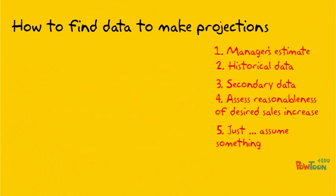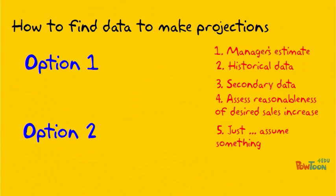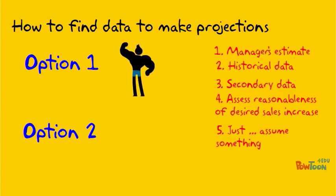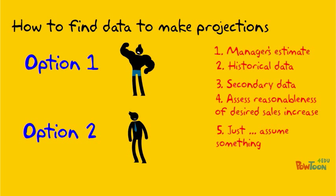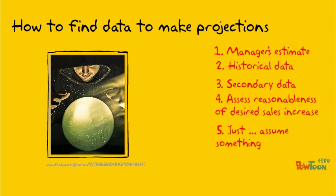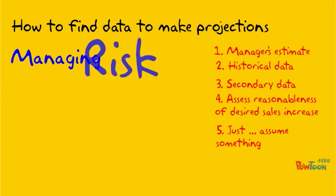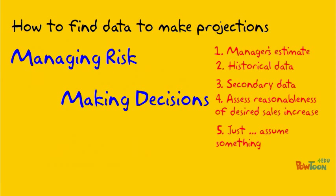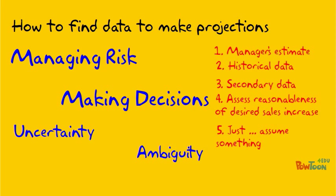Maybe you have two options. Maybe you feel confident about one projection — your first option — backed by historical data and secondary data. Your other option, though, maybe you don't feel confident about it; maybe you were forced to guess when making your projections. You might consider using that as a justification for rejecting the second option. The purpose here isn't about knowing the future — it's about managing your risk and making decisions in uncertain and ambiguous environments.